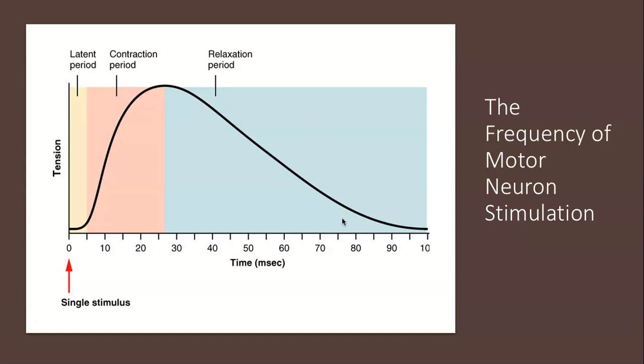That isolated contraction is called a twitch. You've probably all felt a twitch in one of your muscles. The twitch doesn't produce any real force—you can't do any real work. You couldn't lift a dumbbell if your bicep twitched, correct?